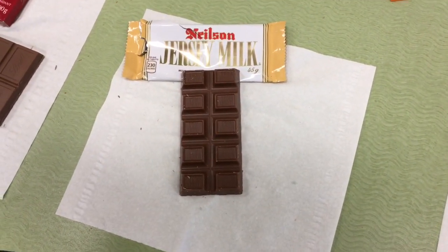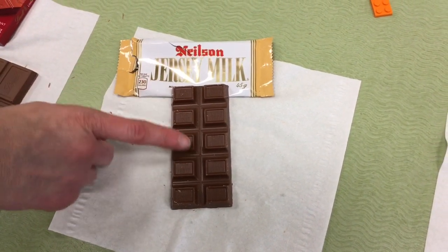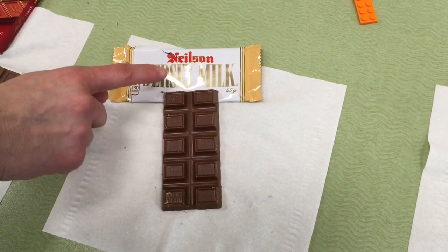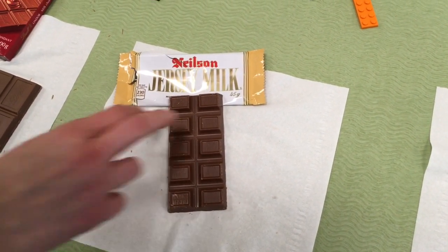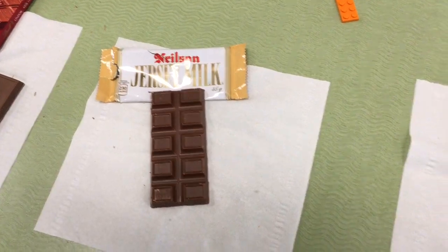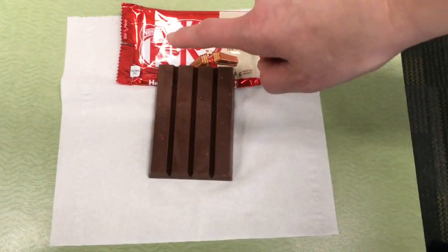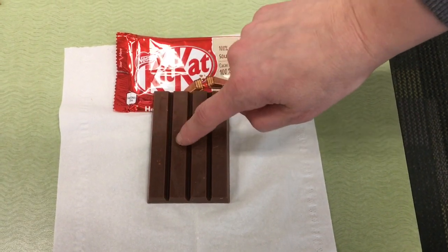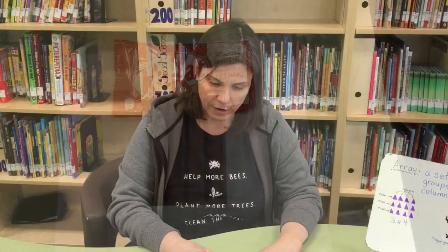Are you getting hungry? Here we go — one, two, three, four, five rows times one, two, so this is a five times two array, which equals two, four, six, eight, ten. Finally, last but not least, we have one long row with one, two, three, four pieces in it — a one by four array.